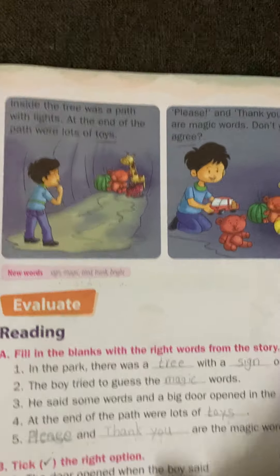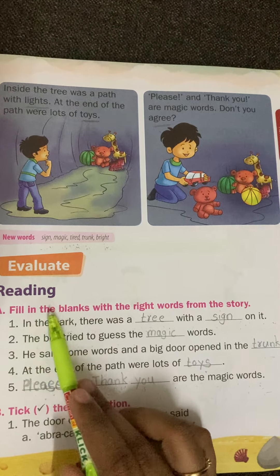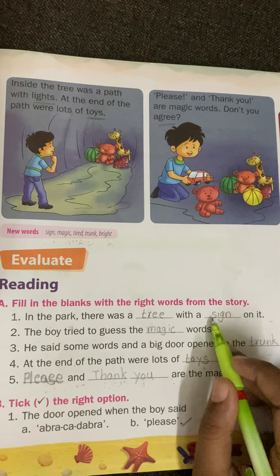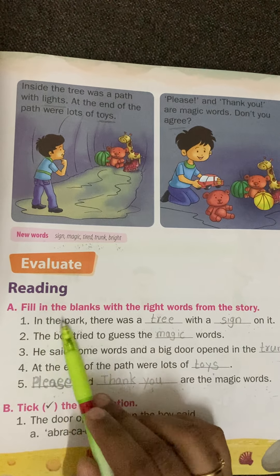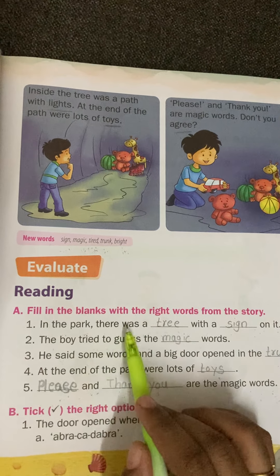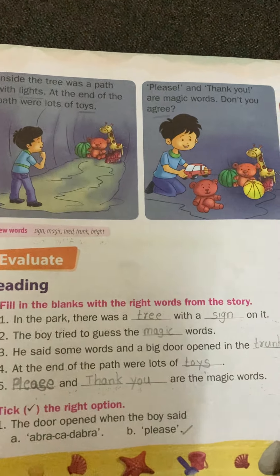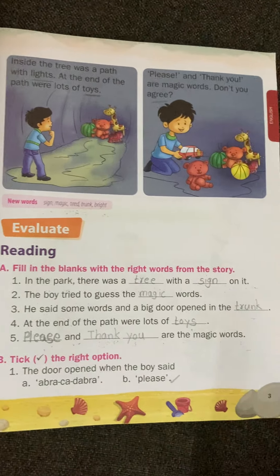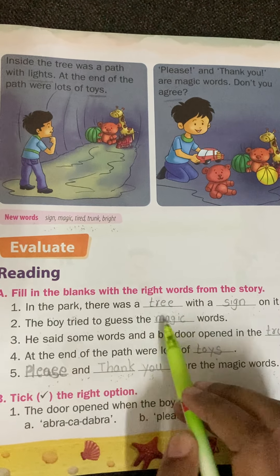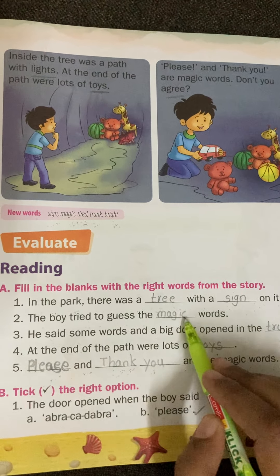I hope you understood the lesson. Now we will go into the exercises. Fill in the blanks with the right words from the story. In the park there was a tree with a sign on it. The boy tried to guess the magic words — M-A-G-I-C, magic words.